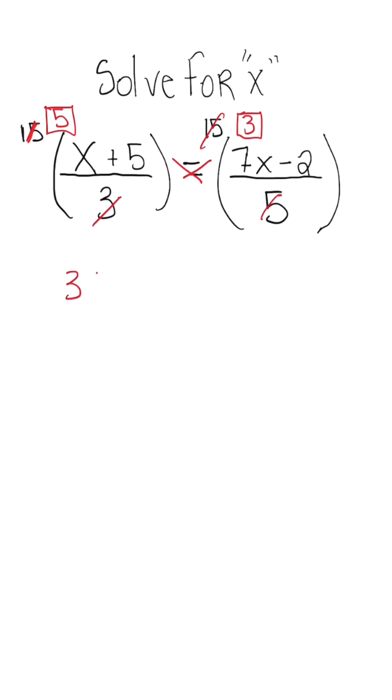So we could take 3 times 7x minus 2 is equal to 5 times x plus 5. This is why you need to know proportions and how to set them up.